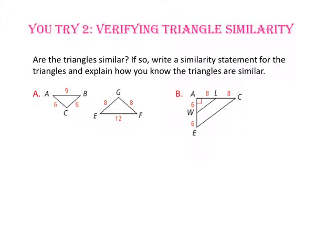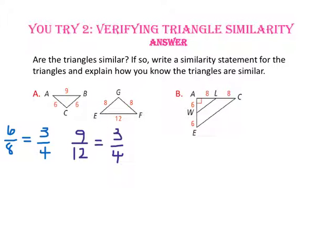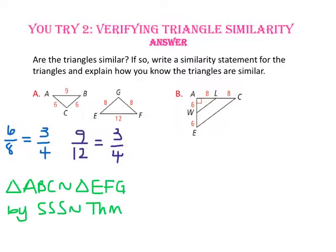Pause the video and try number 2. Are the triangles similar? If so, write a similarity statement and explain how you know. Side AC and CB are congruent, and side EG and GF are congruent — they share the same ratio of 6 to 8. The third sides AB and EF have the ratio 9 to 12. Since all three pairs of corresponding sides are proportional, the triangles are similar by the side-side-side similarity theorem. Be sure to write your similarity statement in corresponding order.